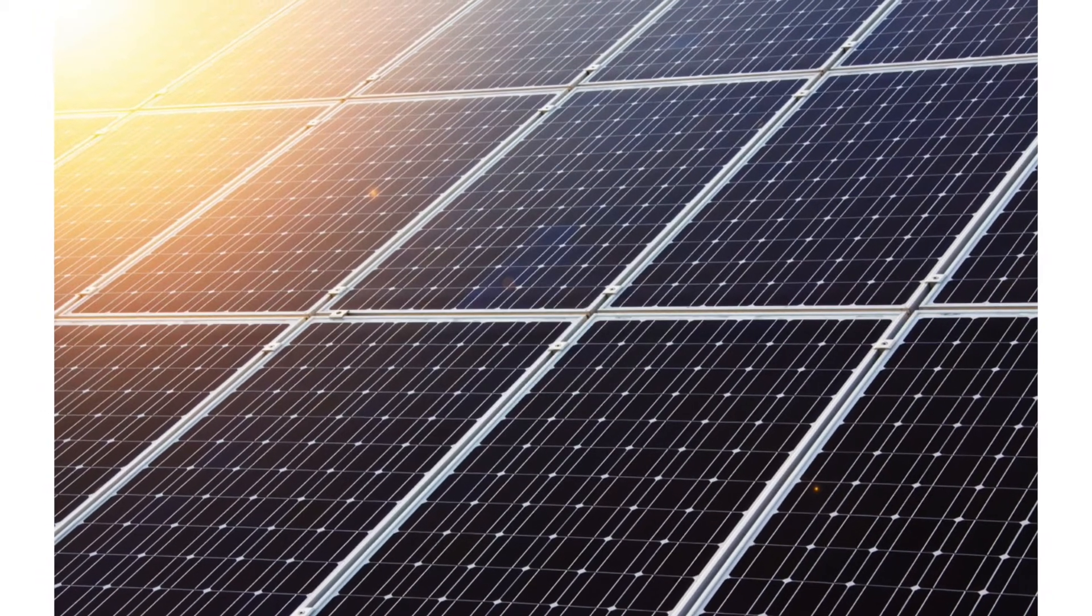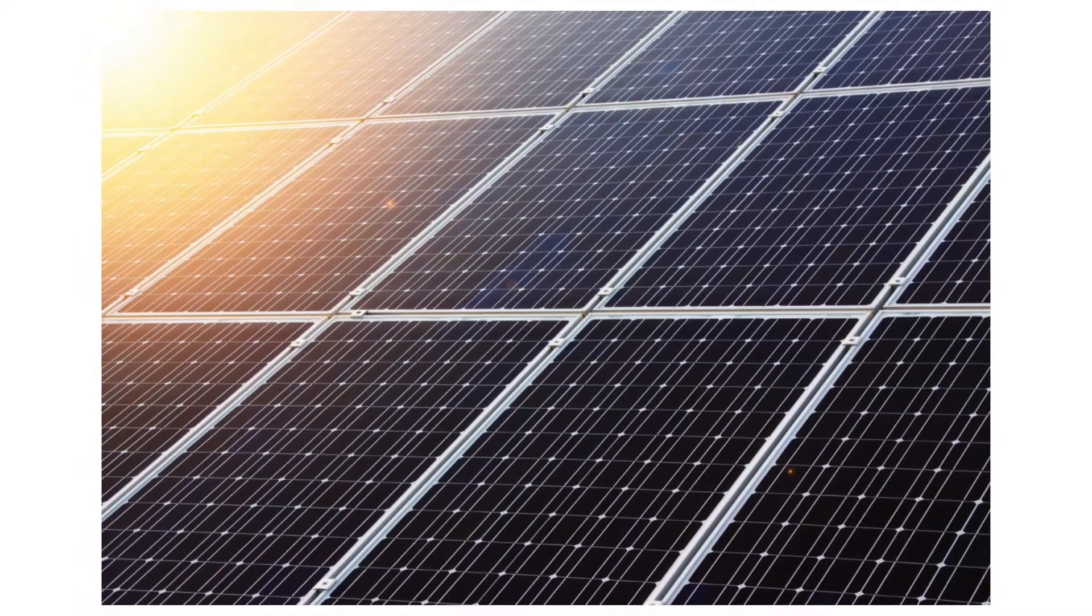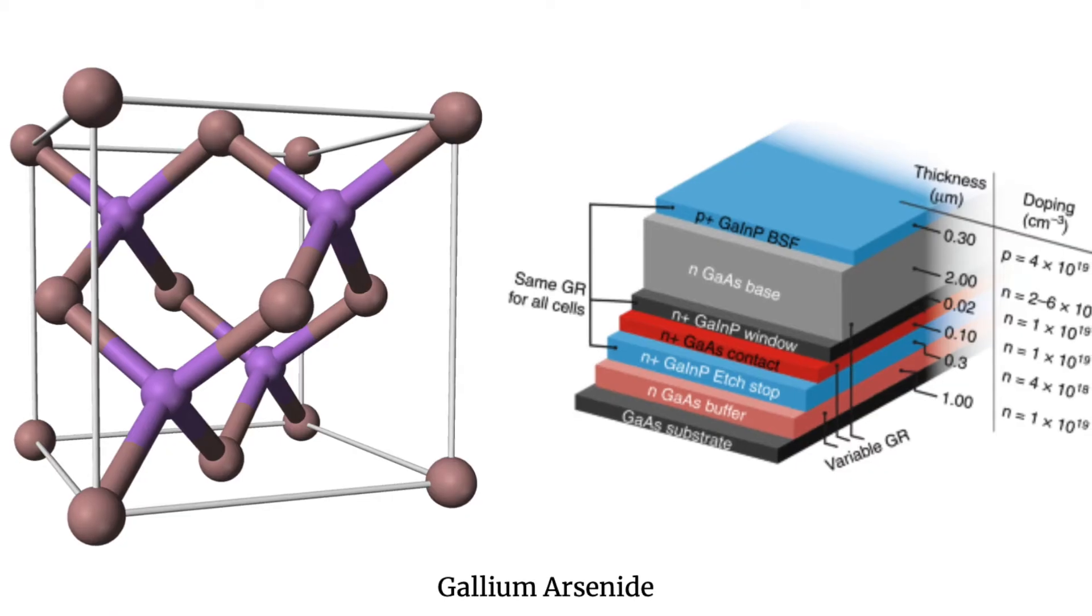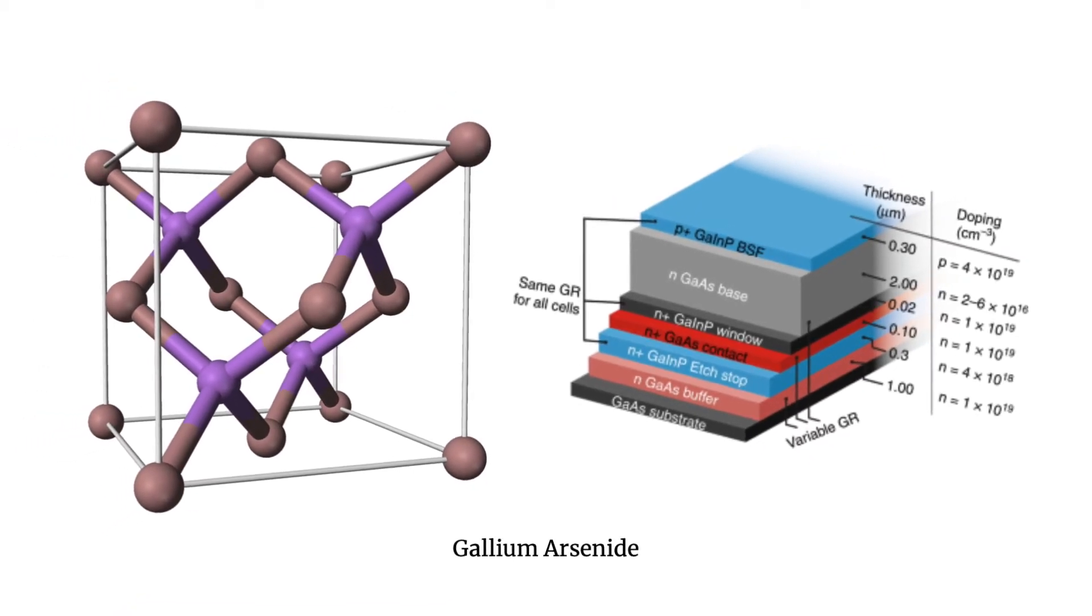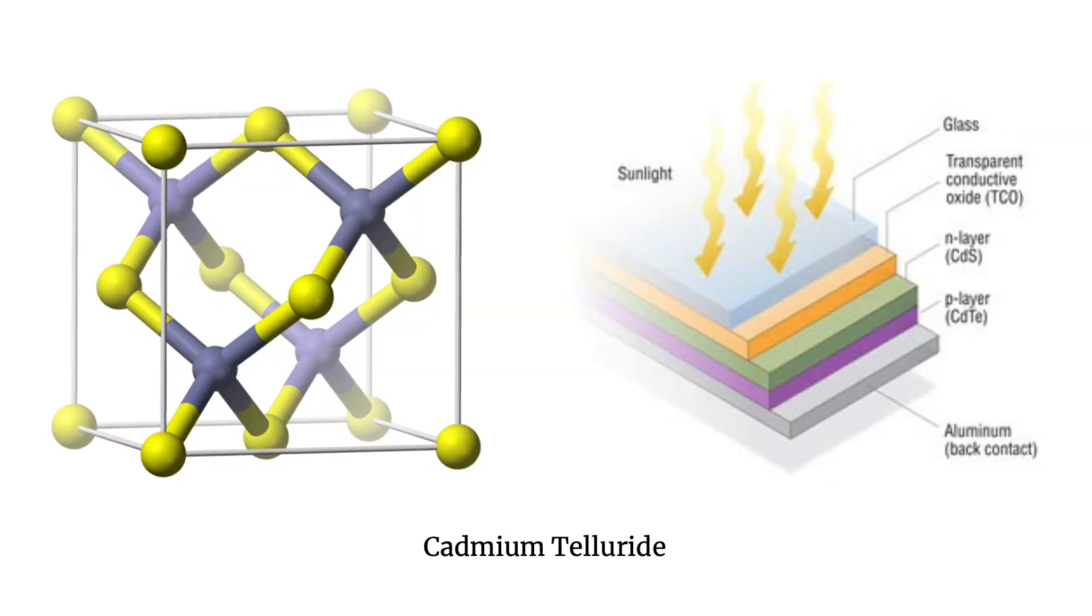Solar panels come in various different types, depending upon the materials they are built from, such as gallium arsenide, silicon and cadmium telluride.